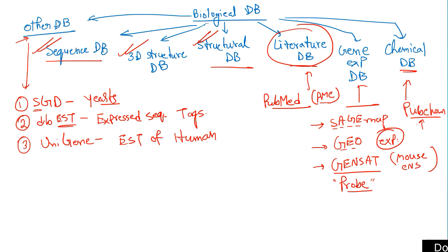We will now talk in detail about three major database types: the sequence database, which covers nucleotide sequences and can be primary or secondary sequence type; the structural database, which covers protein secondary structure, super-secondary structure, domains, and motifs; and the 3D structure database, also focused on proteins. Let's move on and discuss these.